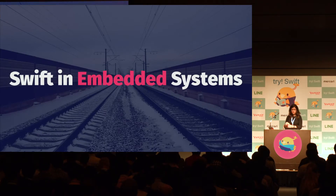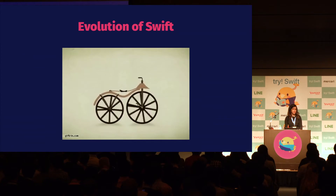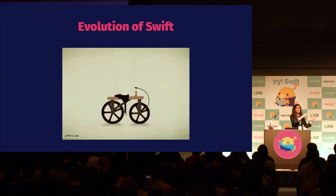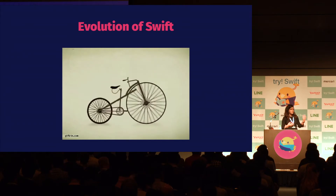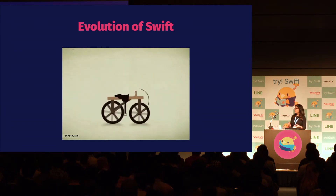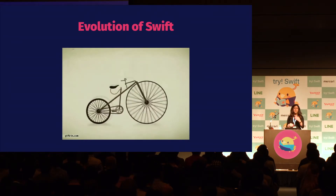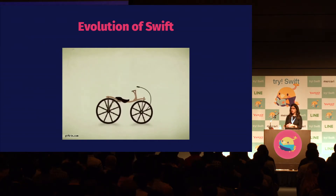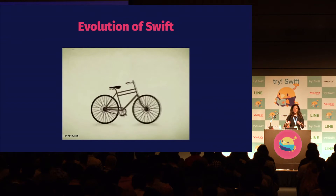Swift in embedded systems. If you want to talk about that, we first need to talk about the evolution of Swift. Swift is a very flexible and versatile language. At the beginning, it was mostly created for mobile development, but then it transitioned into server-side development with frameworks such as Vapor, Kitura, or Perfect. What we have yet to see is extensive usage in embedded system development, and we are still at the beginning of this technology.